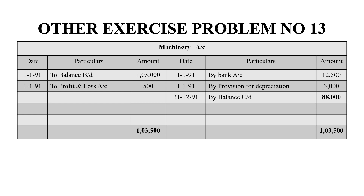You will find the working note. If we are following provision for depreciation, we have accumulated depreciation. The credit balance on 31-12-1991 is Rs.88,000, and the grand total on both sides is Rs.1,03,500.